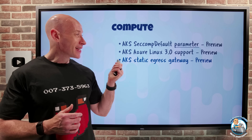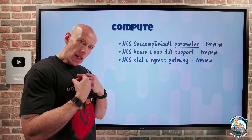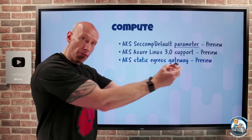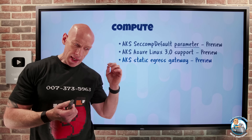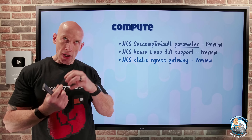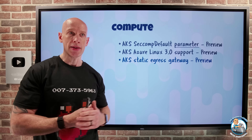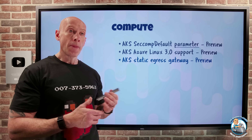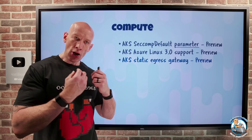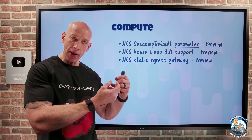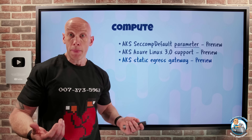The AKS static egress gateway is now in preview. Ordinarily, if I want to control the IP address seen for traffic coming out of my AKS cluster, I would use something like NAT gateway. What this lets me do is create a gateway node pool to which I assign a public IP prefix — a set of contiguous IP addresses — and those get used for outbound traffic. The reason you'd want this is so you can restrict other services to only accept traffic coming from those known IP addresses.